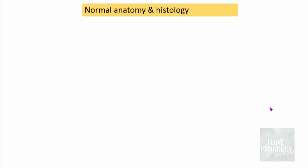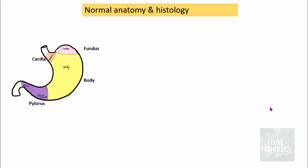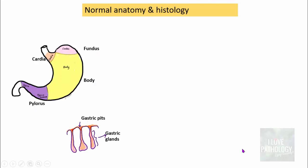Before we get into autoimmune gastritis, let us quickly recollect what we studied in the previous tutorial — normal anatomy and histology. We know that the stomach is divided into four parts: the cardia, fundus, body, and pylorus. The depressions in the mucosa of the stomach are called gastric pits, which then extend into the gastric glands.